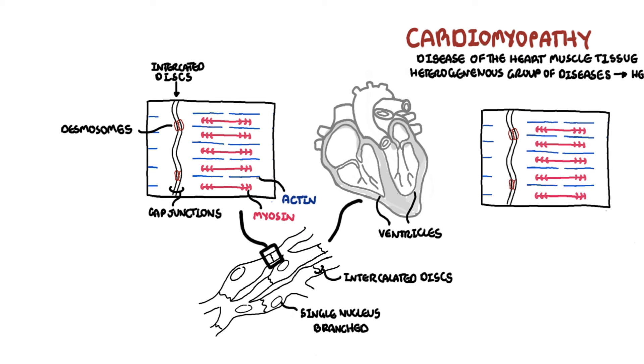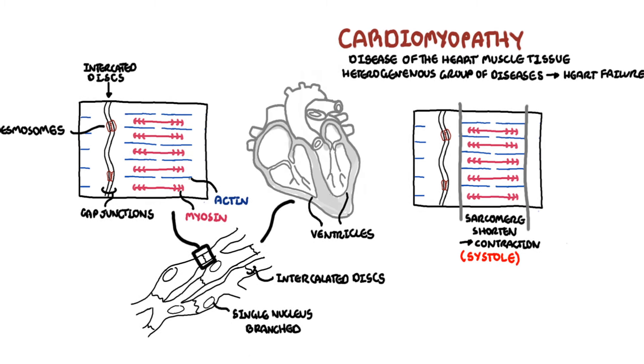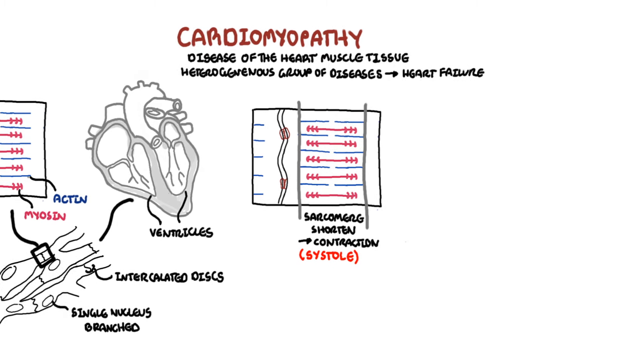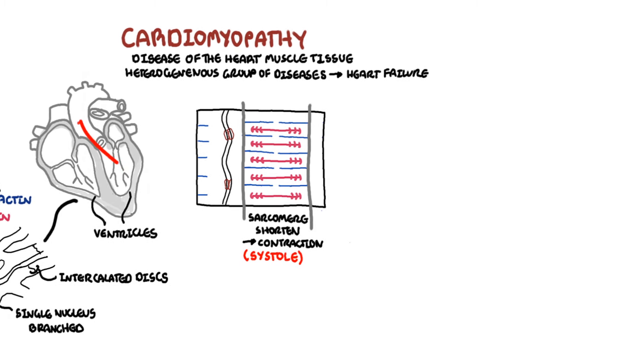The sarcomere shortens during muscle contraction — this is called systole. Systole is when the ventricles contract and pump blood out.